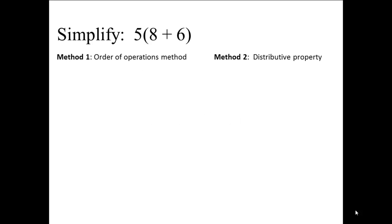Simplify 5 times the quantity 8 plus 6. We will first use order of operations. We add together what's inside the parentheses first — 8 plus 6 gives us 14. So therefore we have 5 times 14, which is equal to 70.